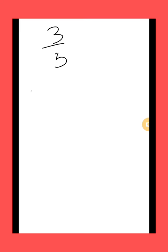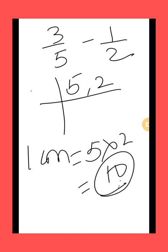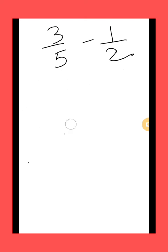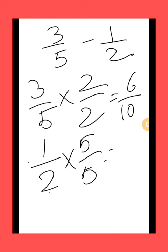Next question: 3 by 5 minus 1 by 2. In this question the denominators are different — they are unlike fractions. So first of all we will calculate the LCM of the denominators, which are 5 and 2. Both are not divisible by the same number, so the LCM of 5 and 2 is equal to 5 multiplied by 2, which is 10. Our first fraction is 3 by 5; in the 5 times table, 10 comes at 2, so we multiply numerator and denominator by 2, giving 6 by 10. Next fraction is 1 by 2; in the 2 times table, 10 comes at 5, so we multiply by 5, giving 5 by 10.